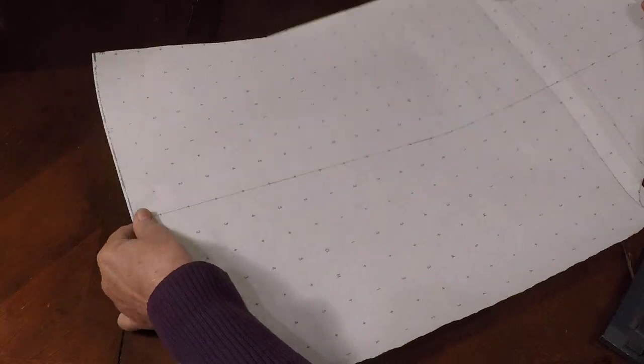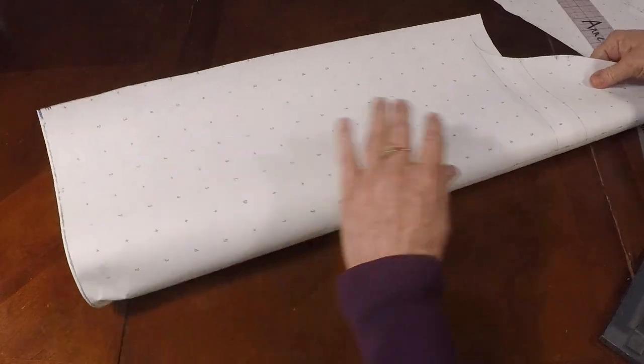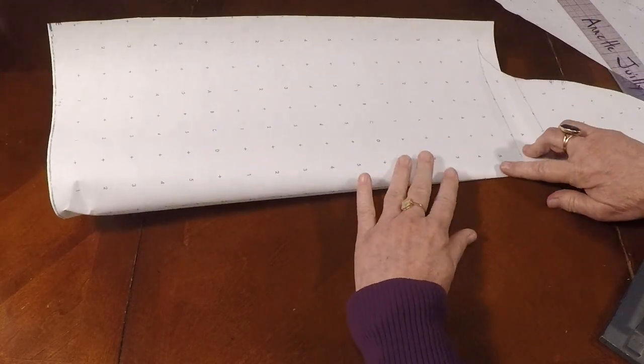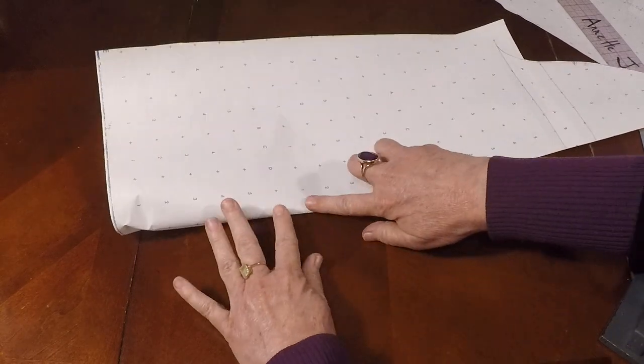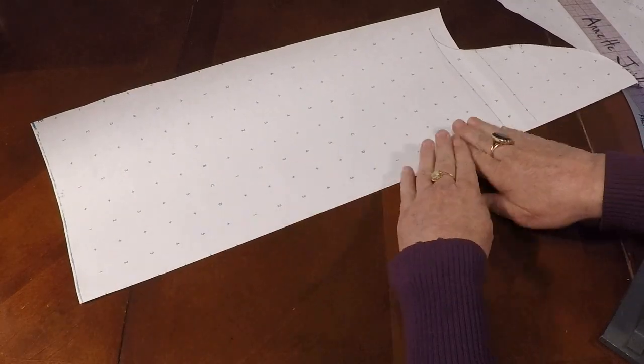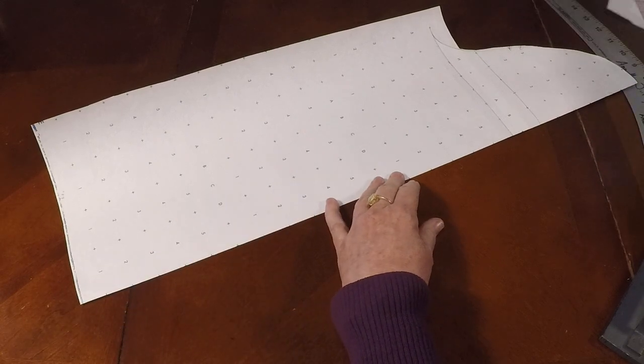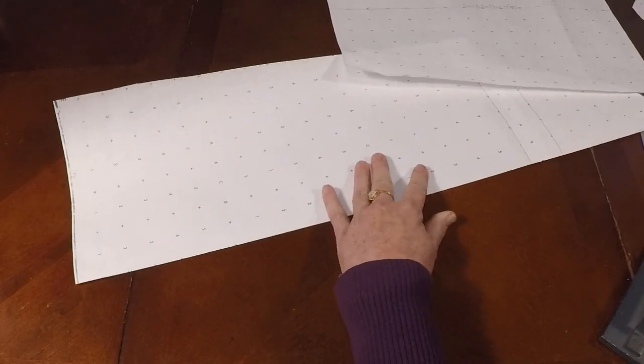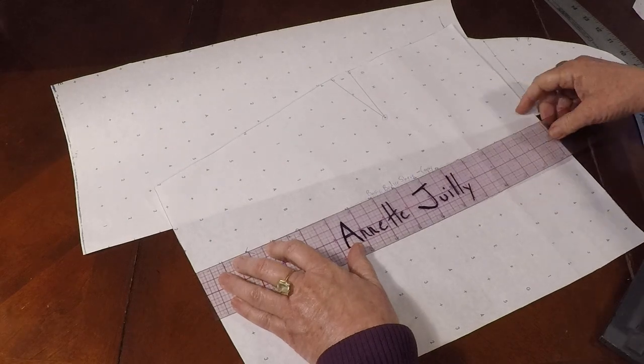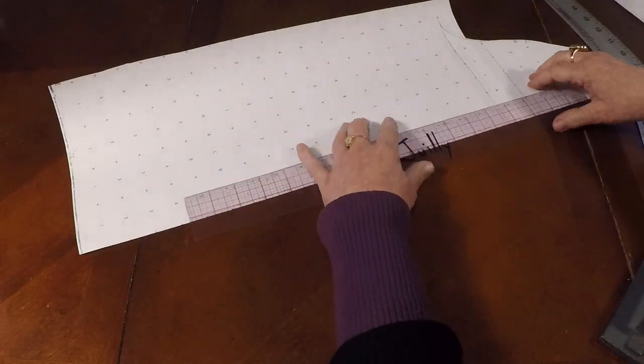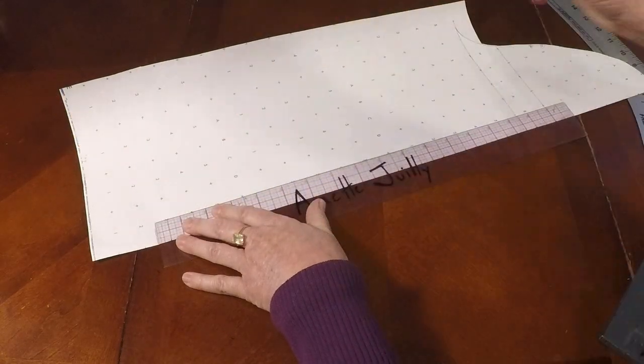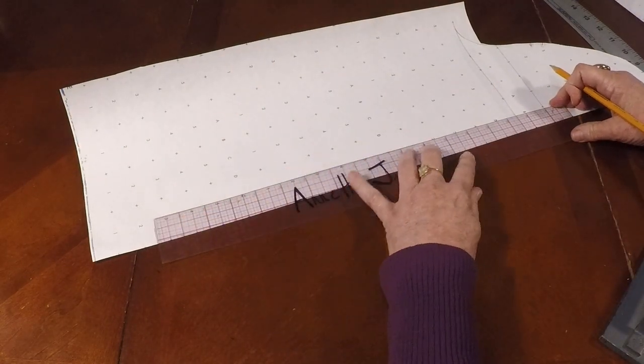Then we have the lower part of the sleeve. Go ahead and fold it on the grain line. And you can see how much you cut off or come up with another measurement. I cut off fifteen and a half. Let's go ahead and mark that at the bottom.